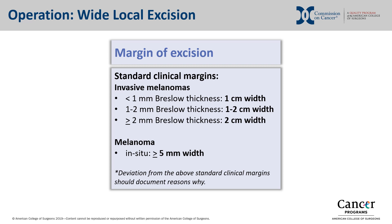For a Breslow thickness of 1–2 mm, a clinical margin width of 1–2 cm is recommended. For a Breslow thickness greater than or equal to 2 mm, a clinical margin width of 2 cm is recommended. For melanoma in situ, a clinical margin width of at least 5 mm is recommended. Lastly, in circumstances of deviation from these standard margins, the surgeon should clearly document reasons why, which may include anatomic constraints such as melanoma located near the medial canthus of the eye, or an operation performed within a clinical trial protocol.